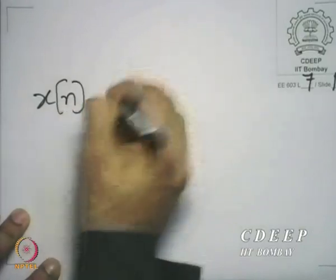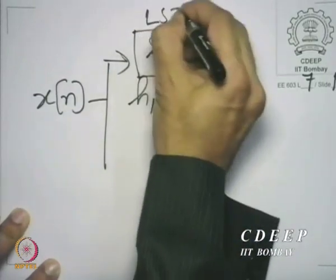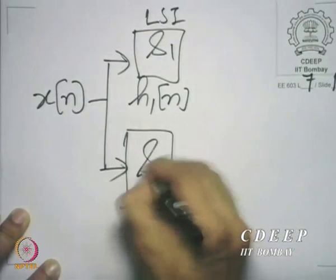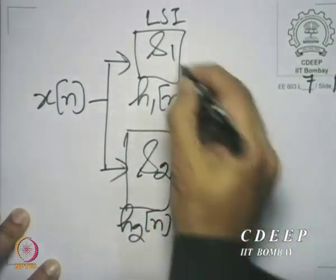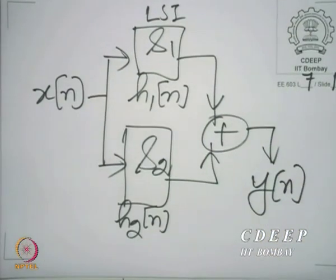We have seen something very interesting: we can combine LSI systems in cascade. It is also a very easy question to answer when we ask what happens to LSI systems in parallel. Suppose you have the same x(n) being given to two LSI systems in parallel — by parallel you mean you apply the same input and then add the outputs. Can we find an equivalent system for this, and if so, what is the equivalent system?